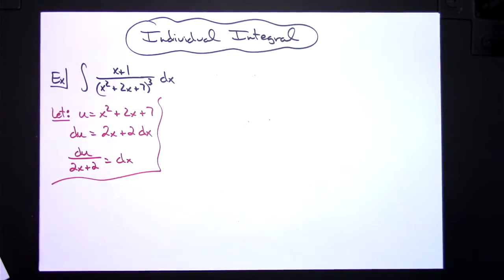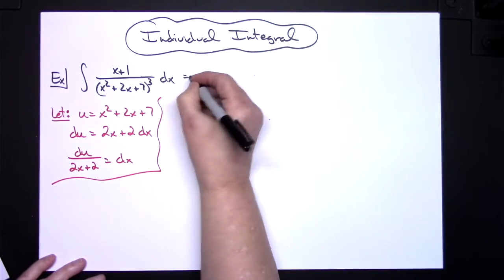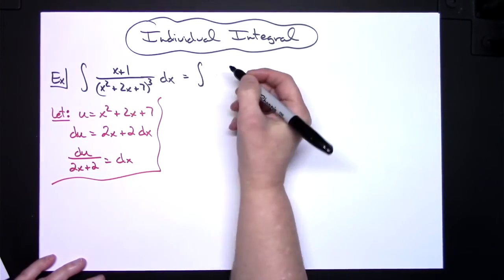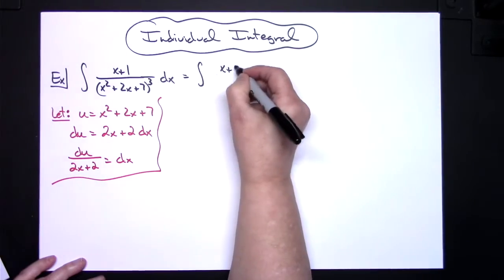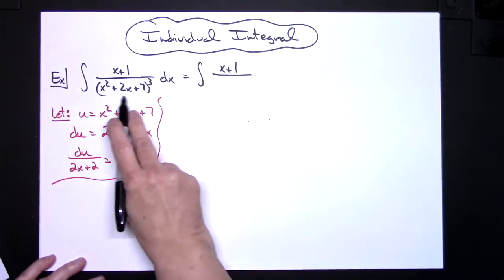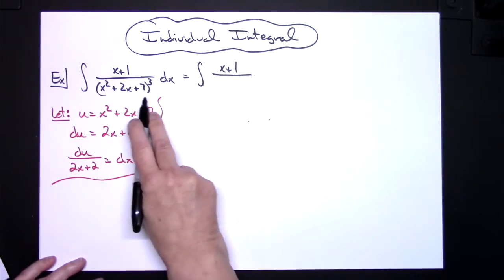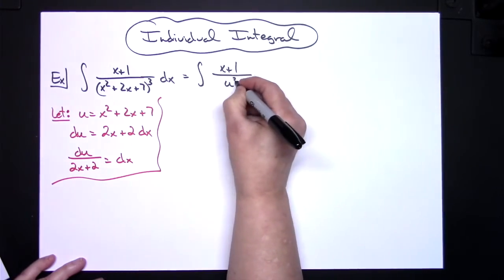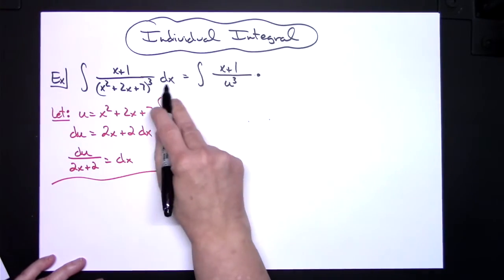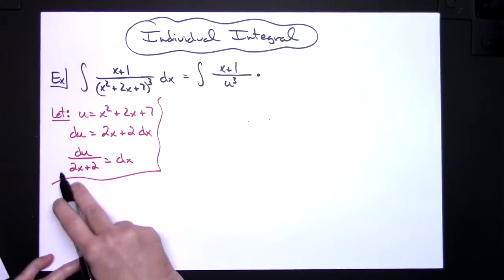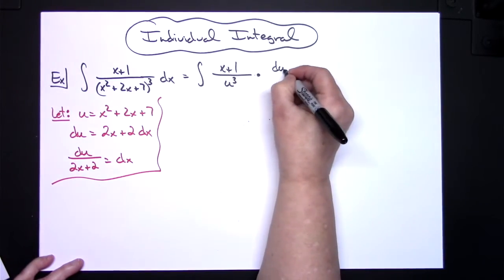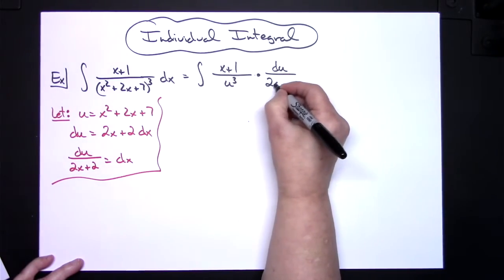I'm going to come back up to this original integral and start making some substitutions. I'll have the integral, I'm going to keep that x plus 1 in the numerator, substitute u in for that base so it'll be u to the third. Then I'm going to substitute dx for what it equals, which will be the du over the 2x plus 2.